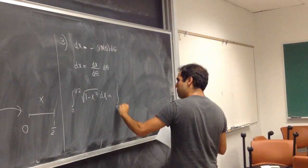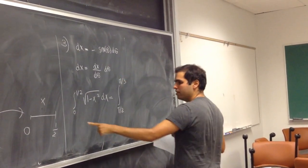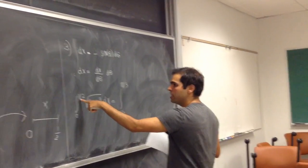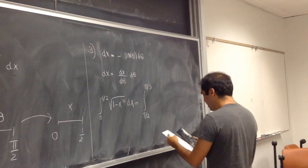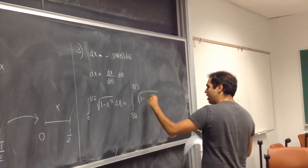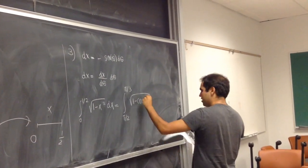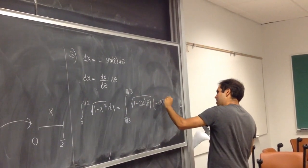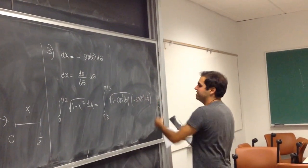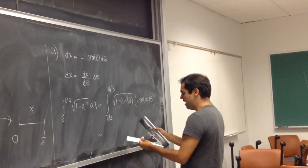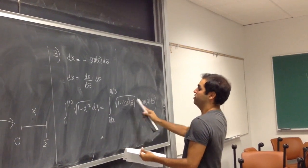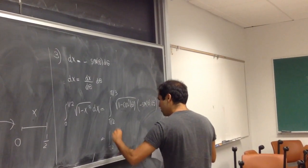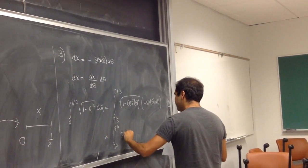That's equal to the integral from pi/2 to pi/3 — the value that makes x equal zero is theta equals pi/2, and the value that makes x equal one half is theta equals pi/3 — of square root of 1 minus cosine squared theta, times minus sine of theta d theta. The nice thing is that 1 minus cosine squared is just sine squared, so taking the absolute value you get sine of theta.